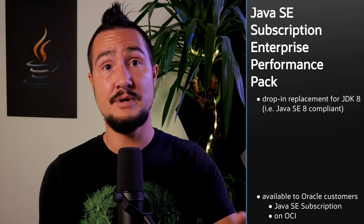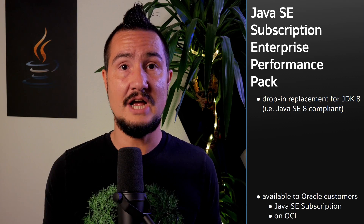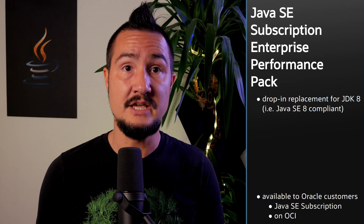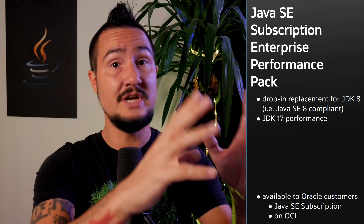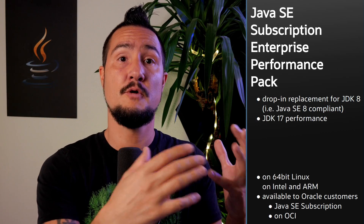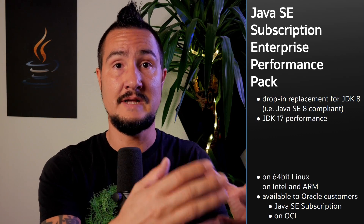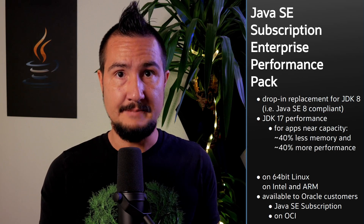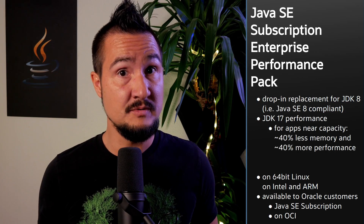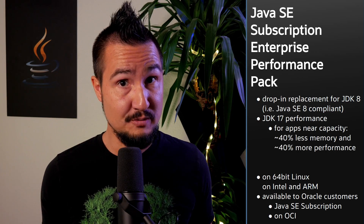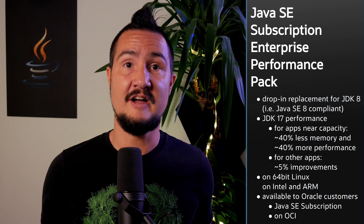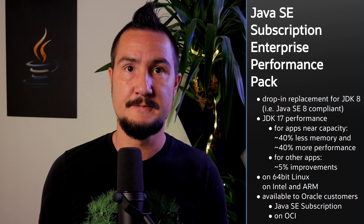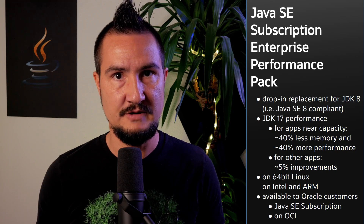It's a drop-in replacement for JDK 8 that is available at no additional cost to all Java SE subscription customers and OCI users. It brings JDK 17 performance to JDK 8 server loads on 64-bit Linux on Intel and ARM. For heavily loaded apps, we've seen memory and performance improvements of about 40%, and even apps not running near capacity may see up to a 5% improvement. To opt in, check the link in the description.